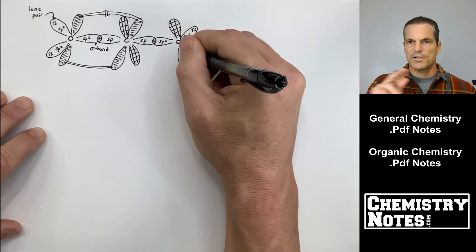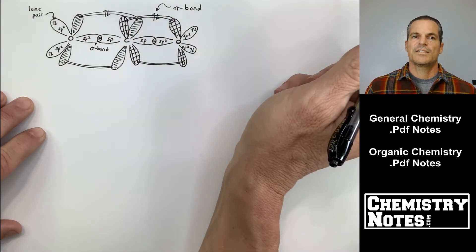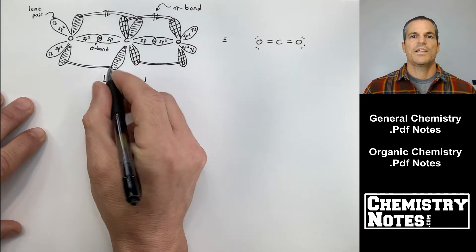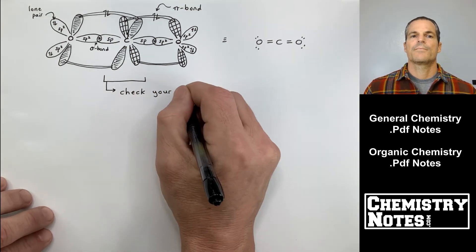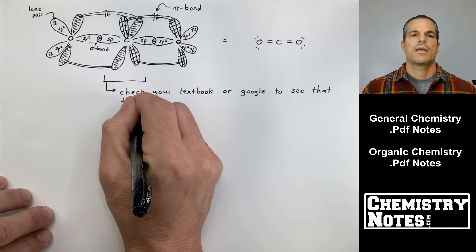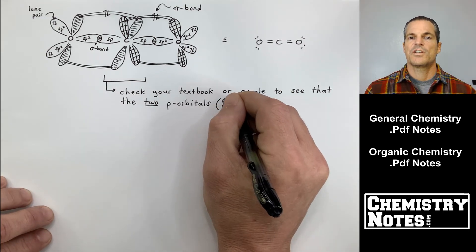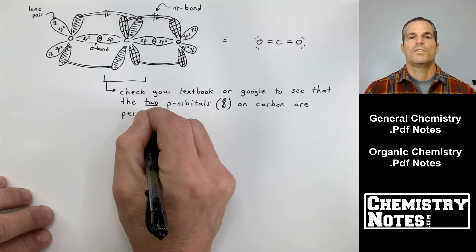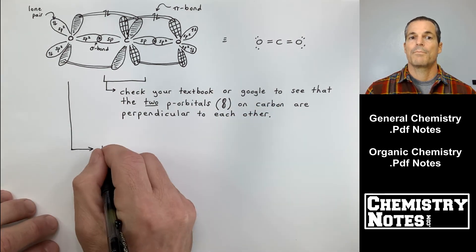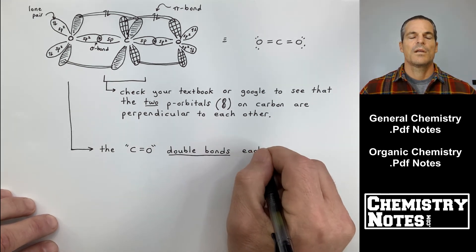Carbon has two 2p orbitals available to make multiple bonds. Each oxygen, in contrast, only has one p orbital available, similar to how carbon worked in the previous example. You can see how the carbon in the center has two p orbitals and they're each making pi bonds with the oxygens on either side. This is the localized electron model for CO2. The two p orbitals on carbon are perpendicular to each other and interact with the properly aligned p orbitals on either oxygen.